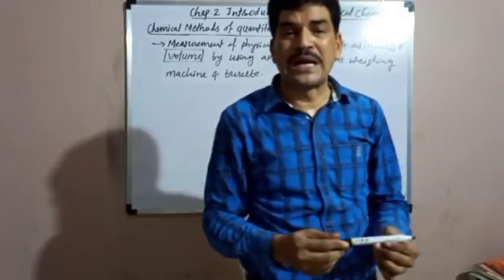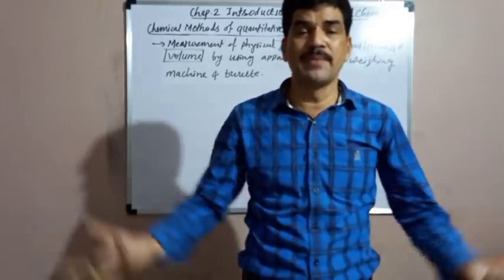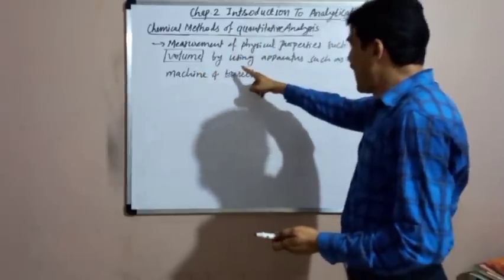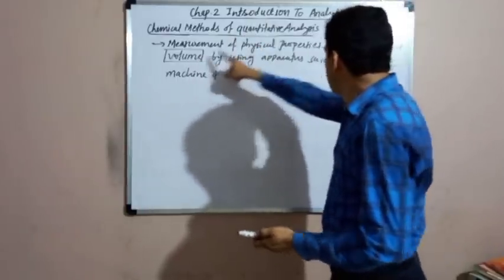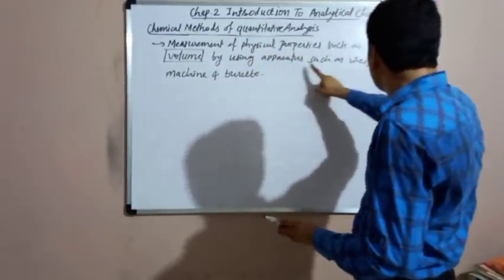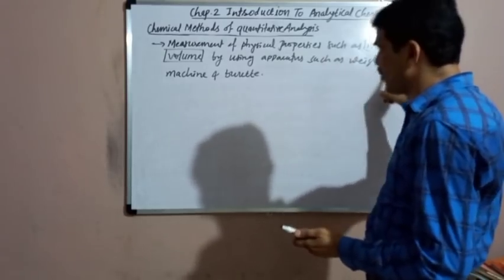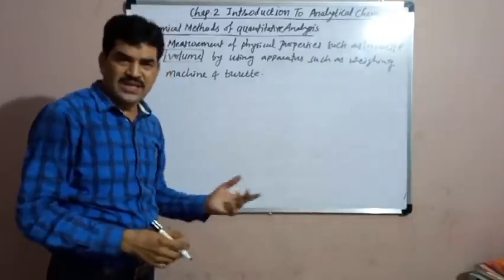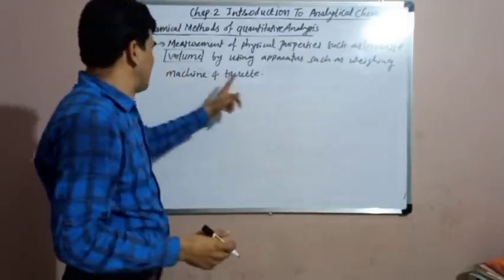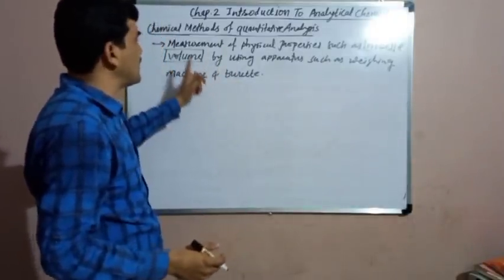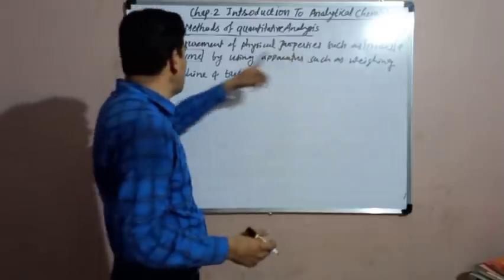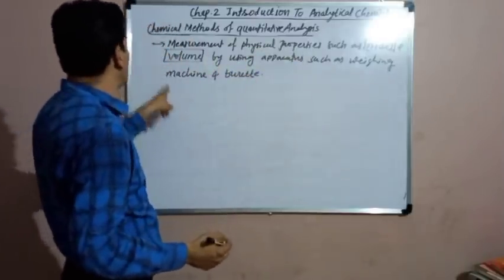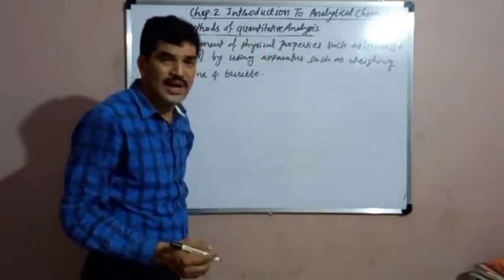In the chemical method of quantitative analysis, we measure the mass as well as the volume. For the measurement of mass and volume, we use apparatus such as the weighing machine and the burette. Mass and volume must be measured in the chemical methods of quantitative analysis.